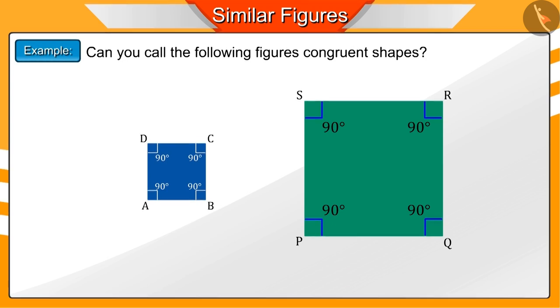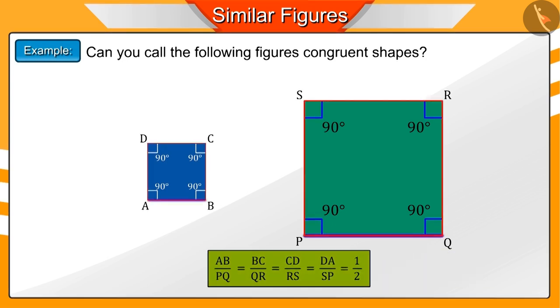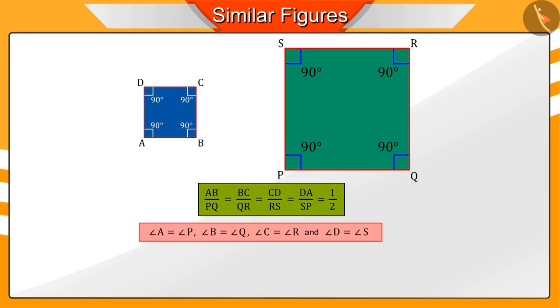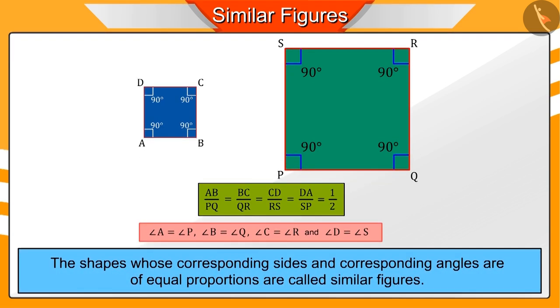Since the corresponding sides of these two figures are equal in proportion and their corresponding angles are also equal, we call them similar figures. The shapes whose corresponding sides and corresponding angles are of equal proportions are called similar figures.